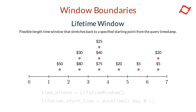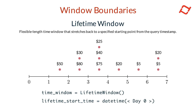A lifetime window is a flexible length time window that stretches from the query timestamp back to a specific starting point in the past. It allows you to aggregate features across the entire available history of a dataset, rather than a fixed length time period. In Tekton, you configure a lifetime window using the lifetime window class.